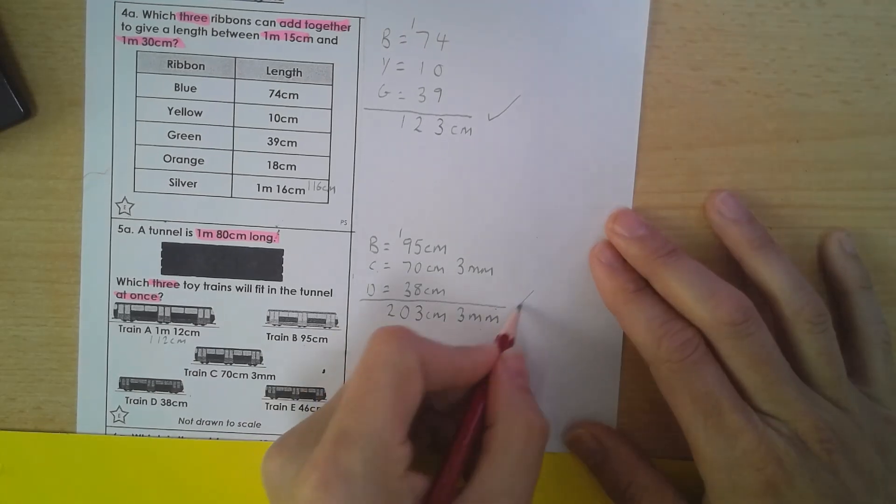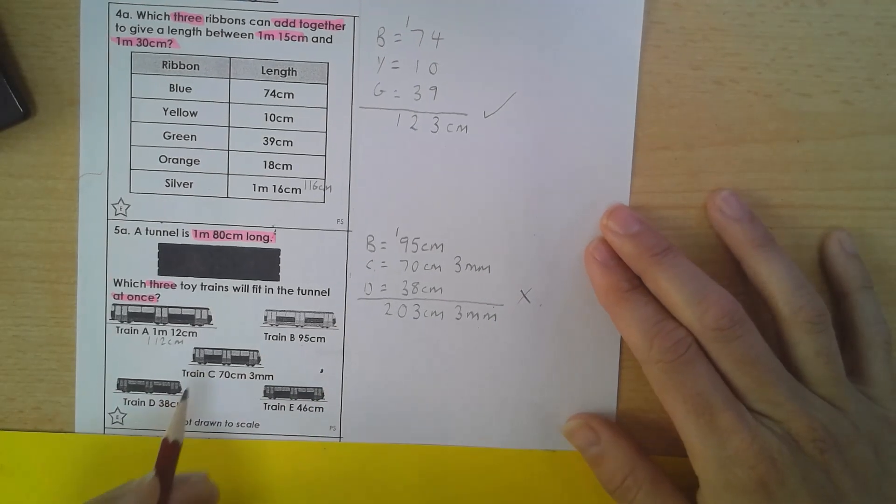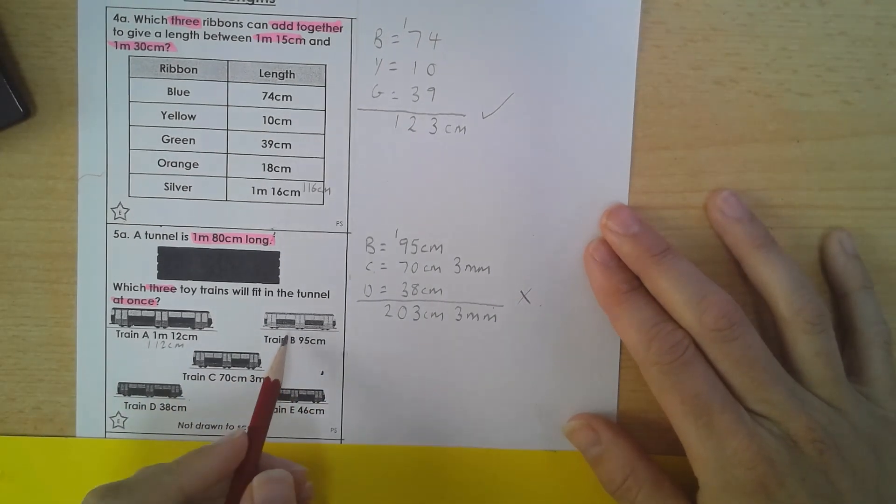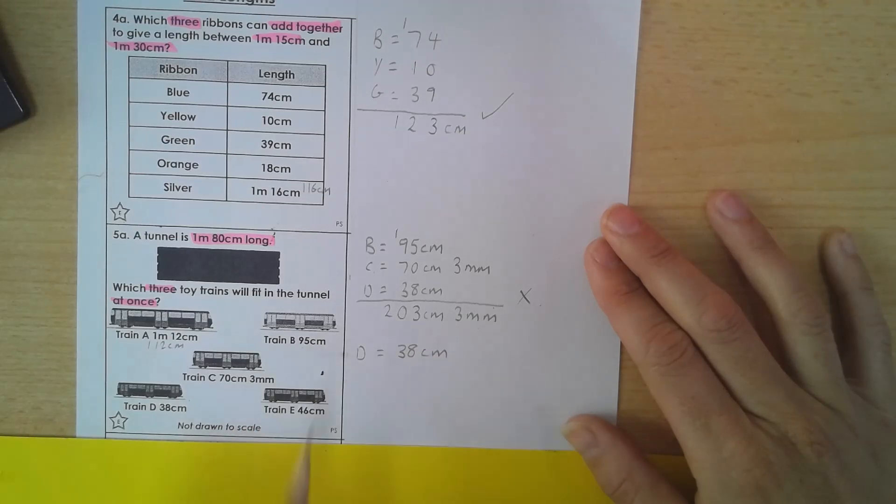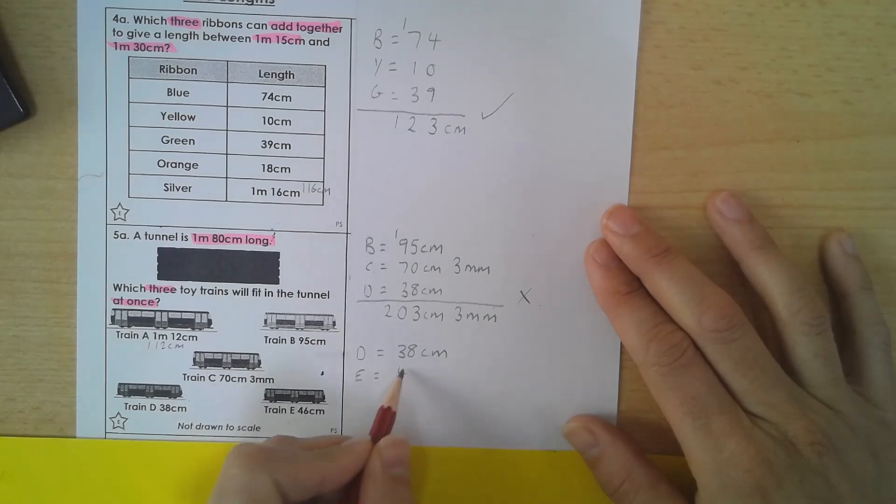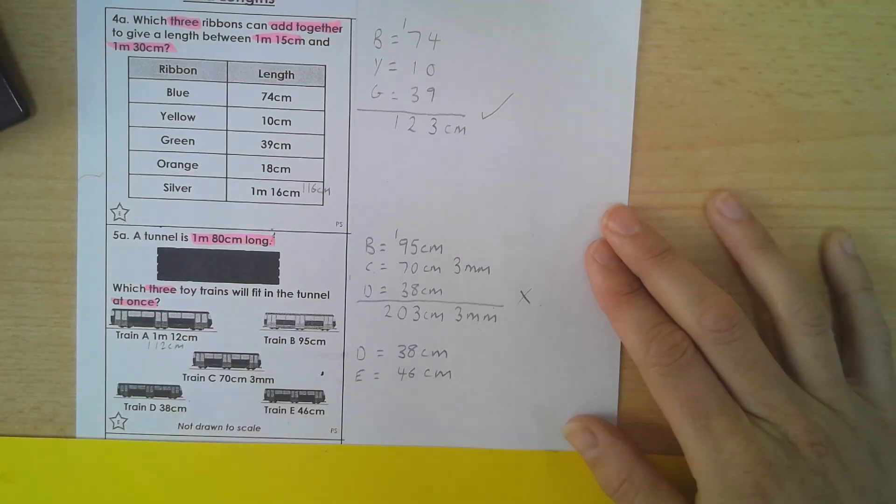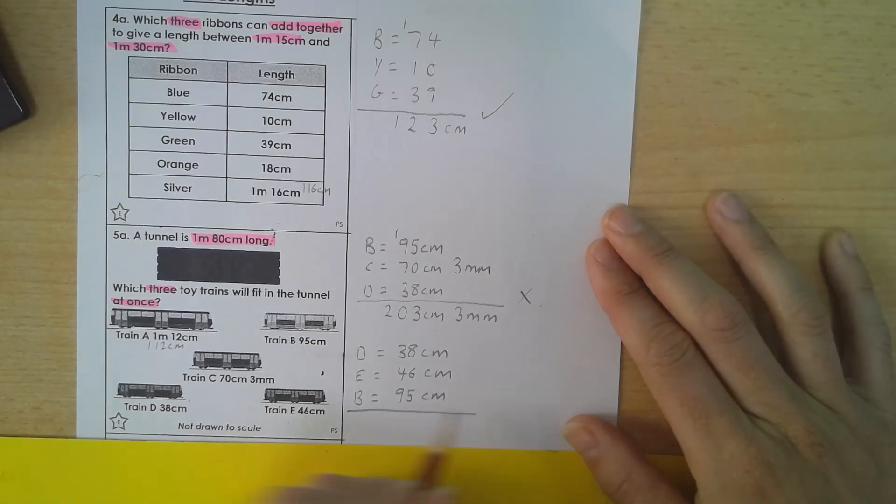Okay, so not to worry. We'll try a different one. I'm going to go with, I'm going to start with D, because it's 38, which is quite a small amount. So we'll go for D. And I'm going to try E, because that's the next smallest. I need 3 trains. So I'm going to pop, let's go for B. I think I'll have enough with B. That is 95 centimetres.